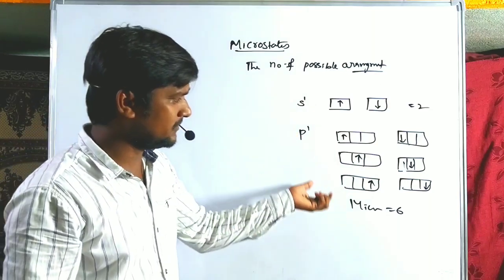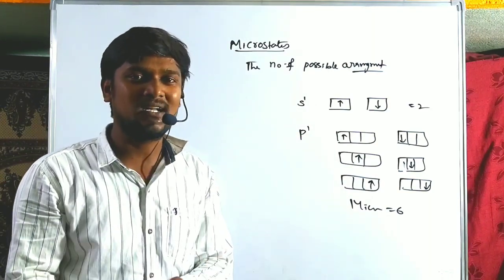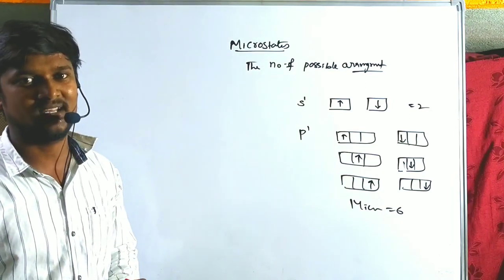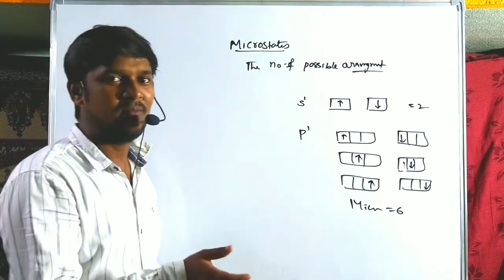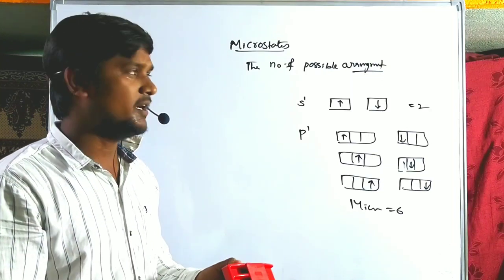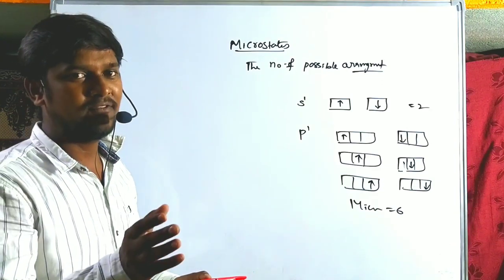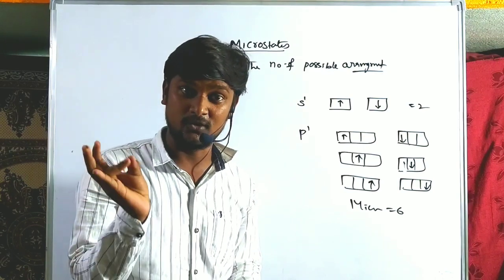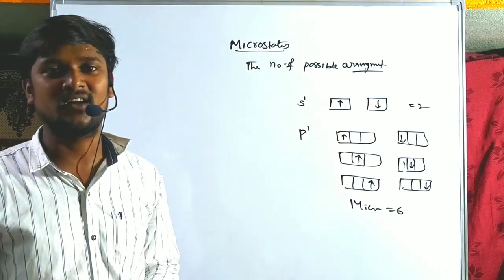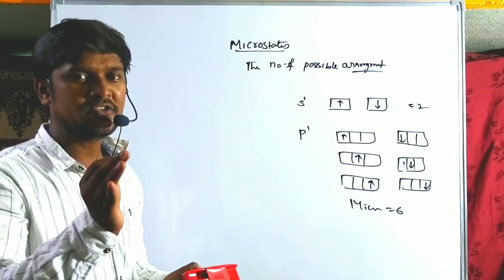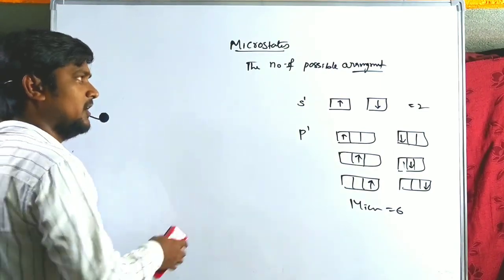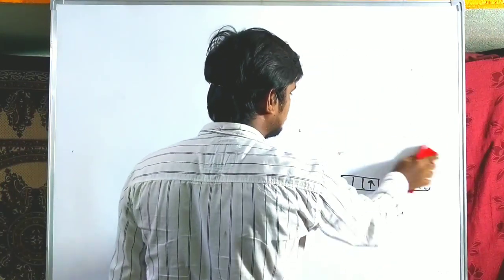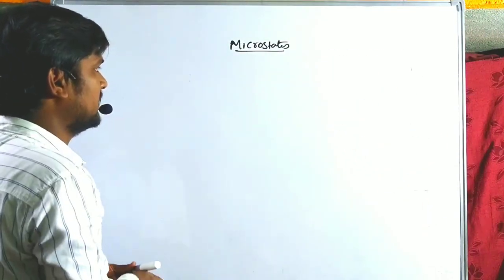If one electron is there it is a simple calculation, but when more than one electron are there, or a term symbol or Mulliken symbol is given, we need to know how to calculate the number of possible microstates in different cases. Now we discuss each and every category very clearly.